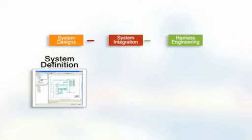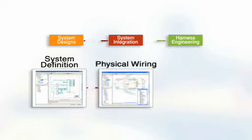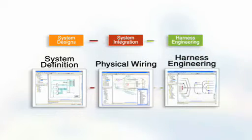Mentor Graphics CHS design software supports the electrical design process from system design through wiring and system integration and harness engineering definition. At each step, the designer is provided with functionality that speeds the design process and ensures high design quality.